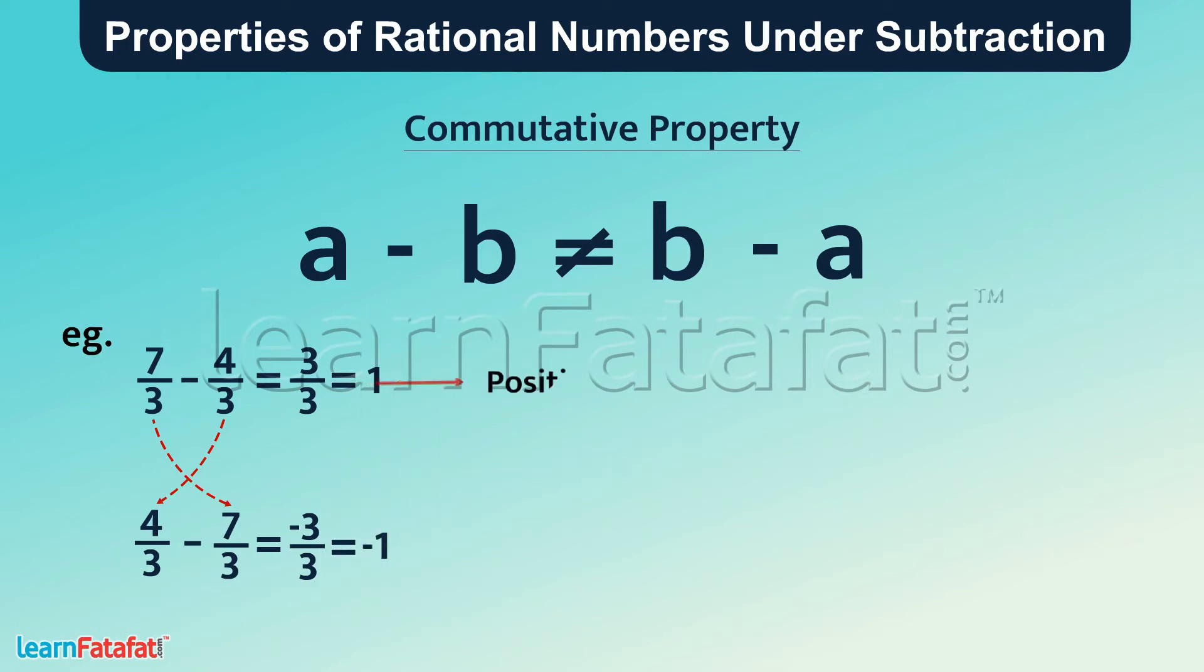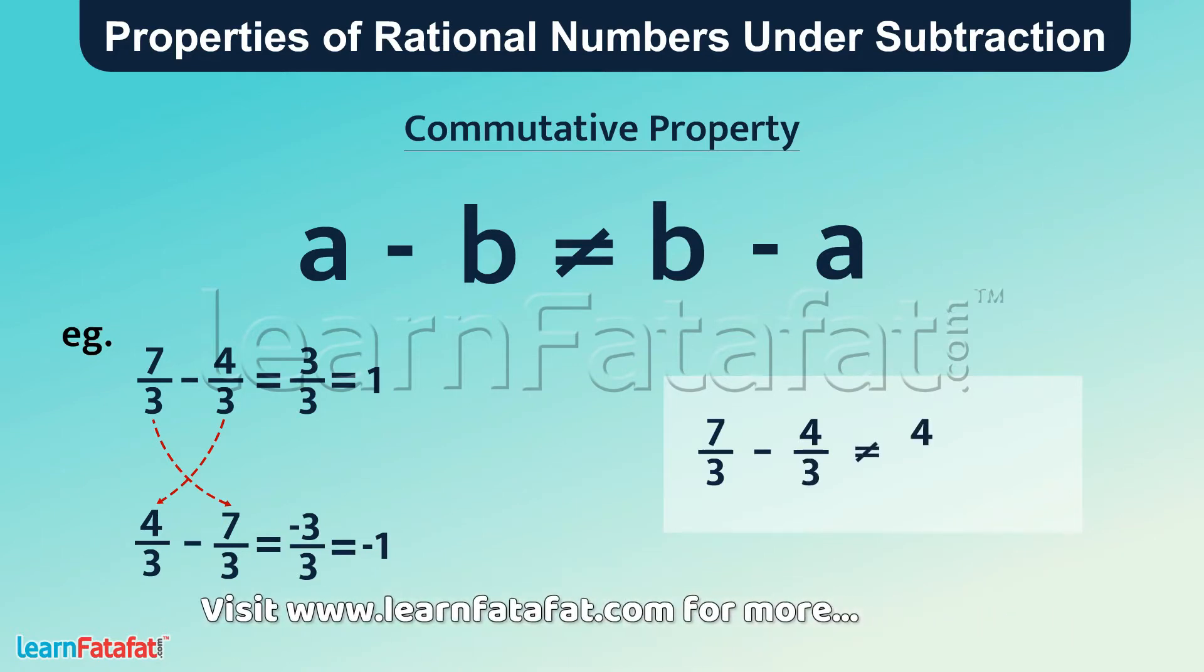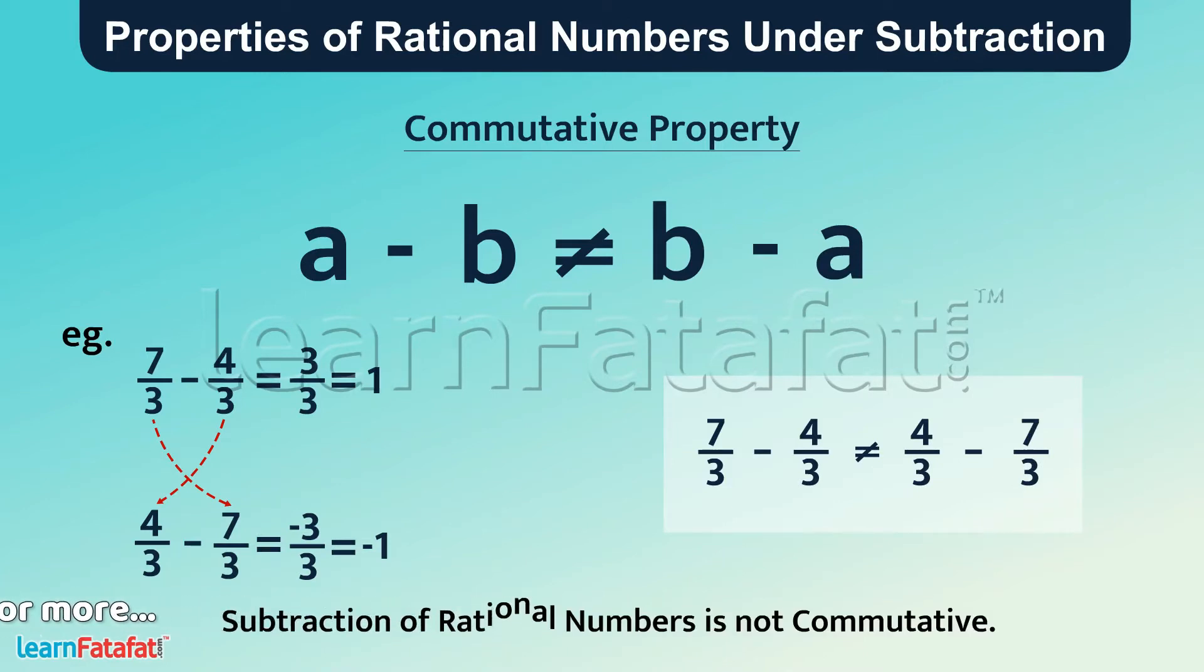1 is a positive integer which is greater than negative integer minus 1. So 7 by 3 minus 4 by 3 is not equal to 4 by 3 minus 7 by 3. Hence, subtraction of rational numbers is not commutative.